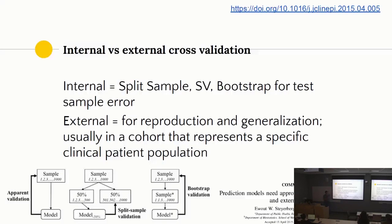External validation could mean different things — new data from different years, data from different cycles, or data from another country. If you are trying to make a generalization about the entire world, external validation is extremely important. If you are just focusing on one specific data source that does not change over time, maybe it is less critical. For example, if you tested a treatment only in Canada but want it approved in the UK, you would need to run an external validation to see whether it works there as well.